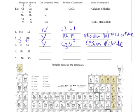The next one has barium, which is a metal, and aluminum, which is also a metal. Two metals? No way — no compound. The one after that is easy: I've got neon. Neon's a noble gas, and noble gases don't form compounds.